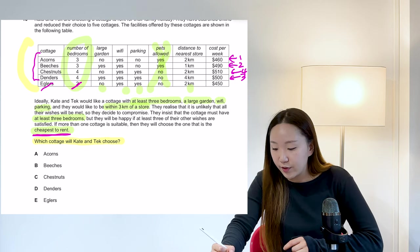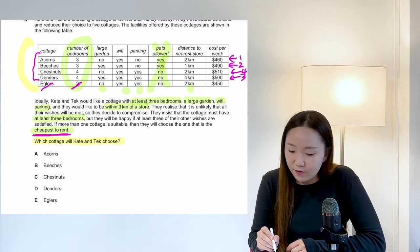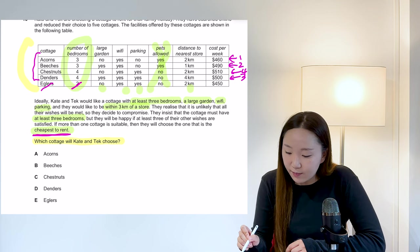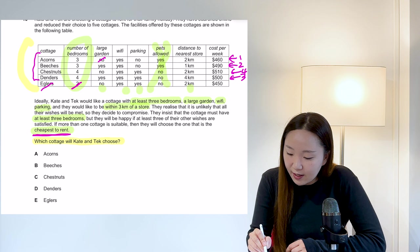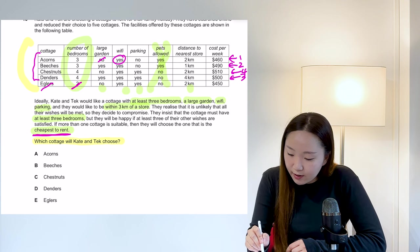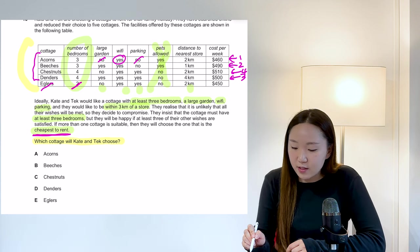So starting with number one, the cheapest. So let's see if it meets at least three of the other requirements. So large garden, no. Wi-Fi, yes. Parking, no. So already that one's knocked out. So we'll move on to Beaches.